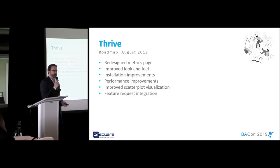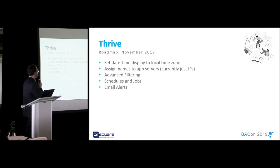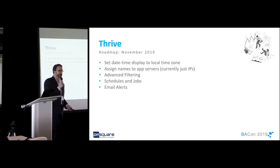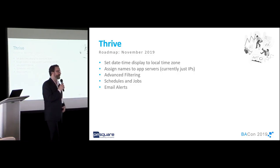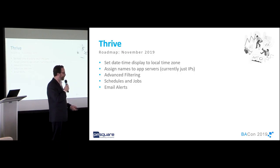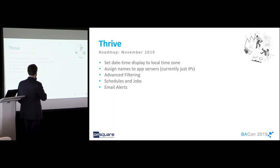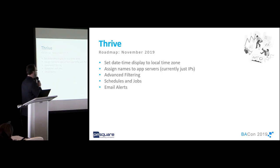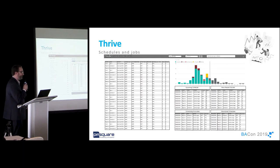So what's coming? This is kind of what we just looked at — there are things I couldn't show, like installation and performance improvements, but those are facets of this release. What will be more interesting is what's coming in November. First, set date-time display to local time zone — right now everything is in Greenwich Mean Time, but we've gotten a lot of feedback that people want to set it to their local time. Similarly, assigning friendly names to app servers. But the major features are: advanced filtering, schedules and jobs, and email alerts. All of this is currently targeted for November 2019.